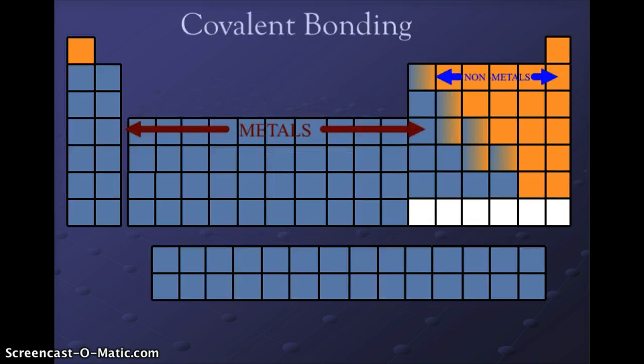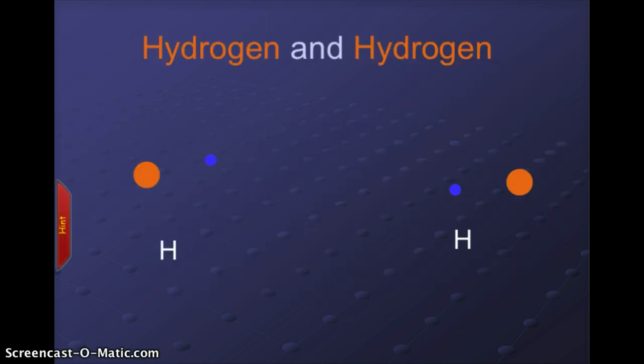When looking at covalent bonding, we are dealing with the elements to the right of the staircase — the nonmetals — and this also includes hydrogen. Our first molecule is the hydrogen molecule. Hydrogen is one of the diatomic elements, and in its natural gas state hydrogen is found in pairs. Hydrogen doesn't follow the rule of octet; it follows the rule of duet, looking for two electrons in its outer orbit.